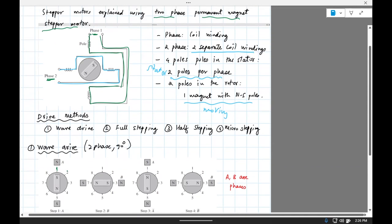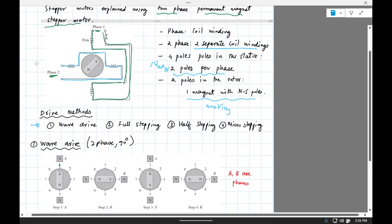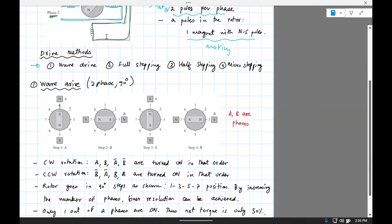Now we'll talk about how do you drive these in steps. We have four methods, and I think they're best illustrated with these figures. Wave drive, full stepping, half stepping, and microstepping. Let's look at wave drive, explained with a two-phase motor.